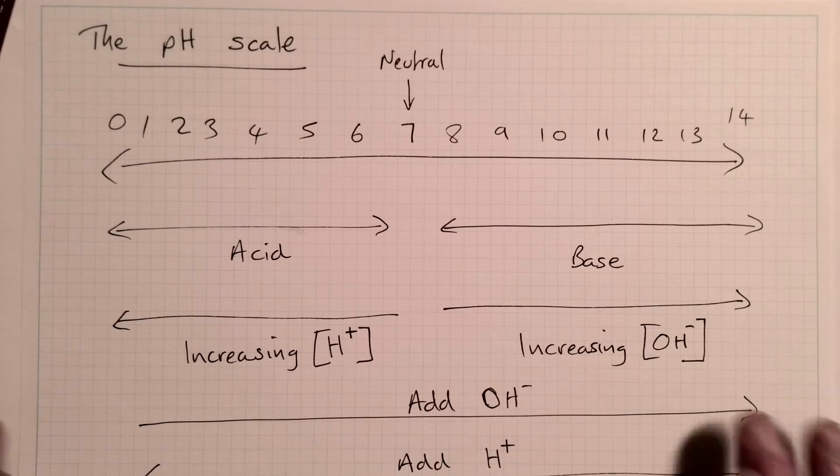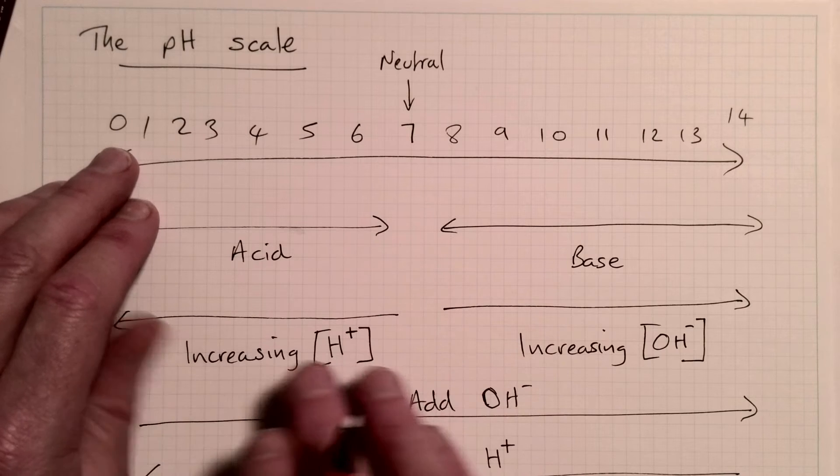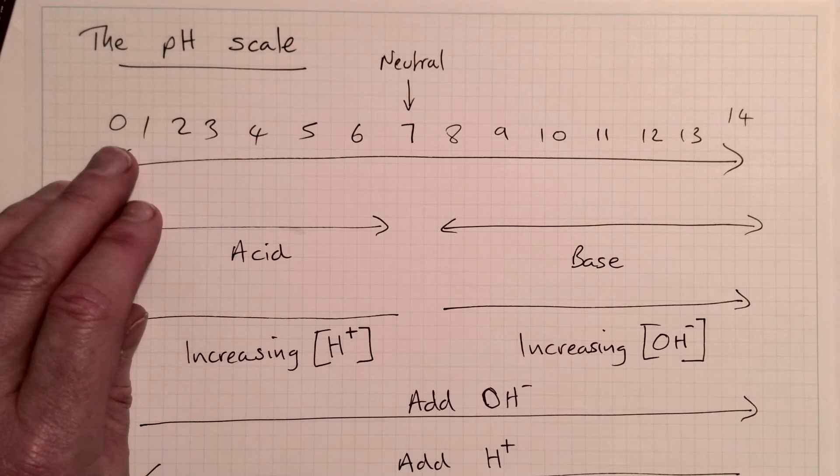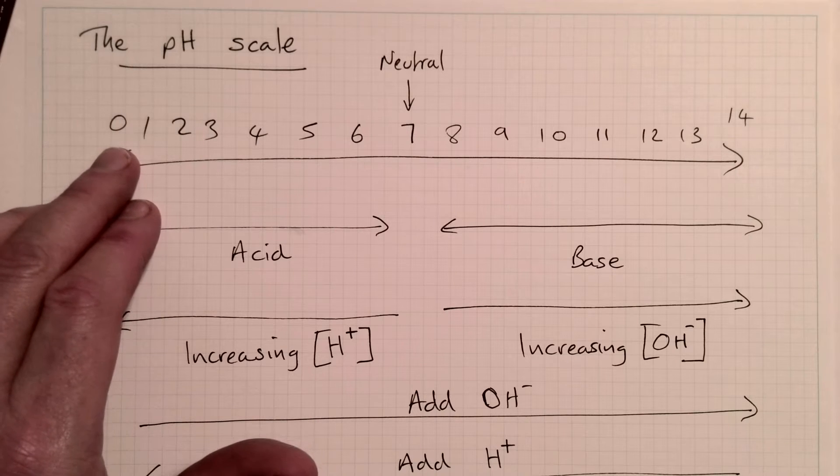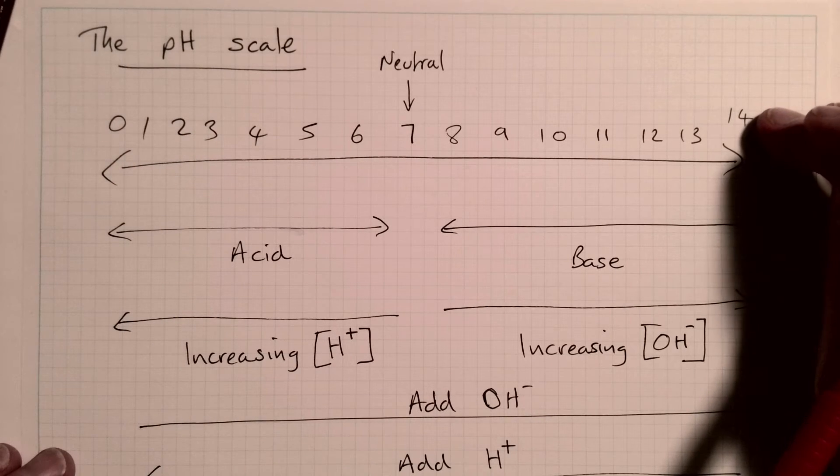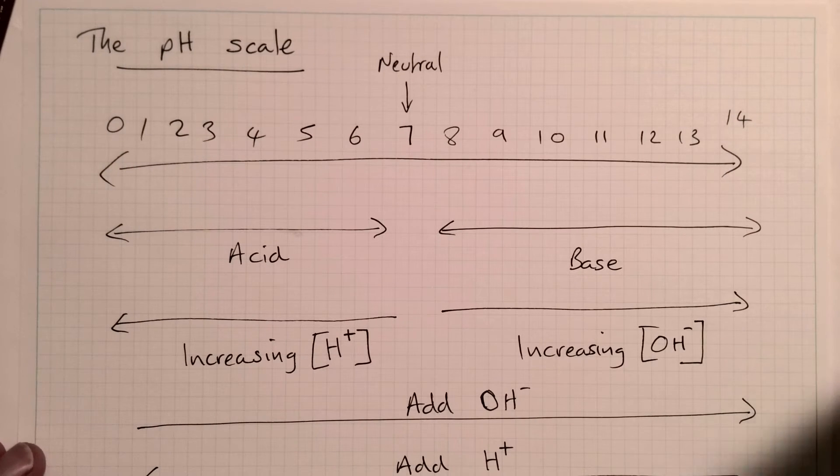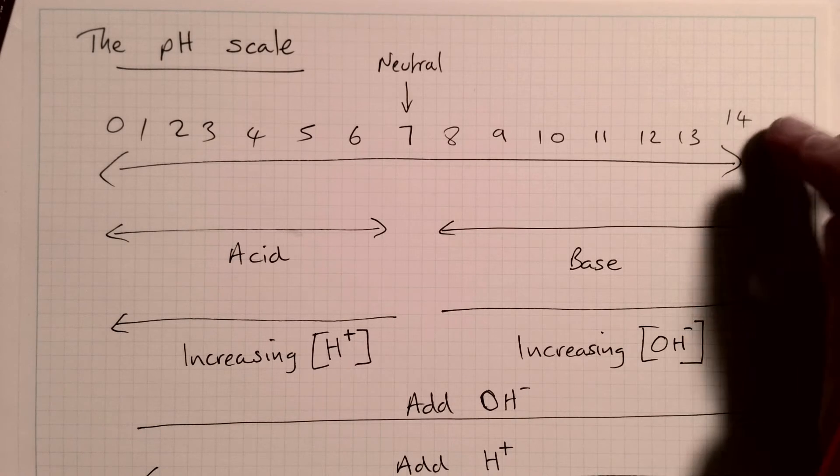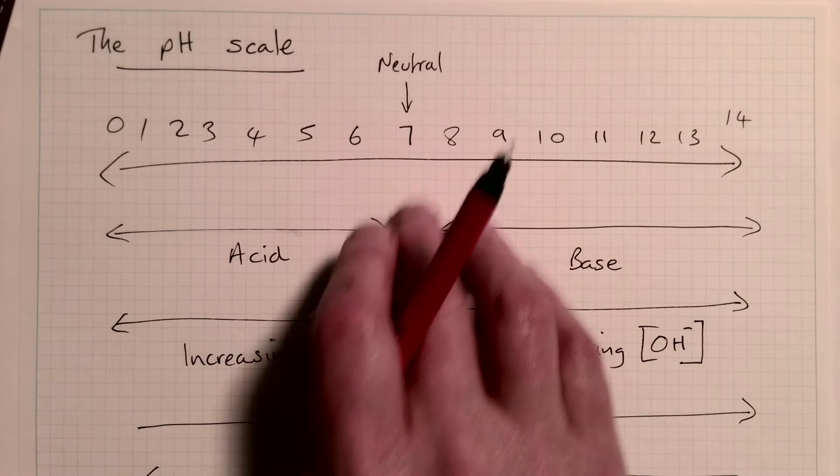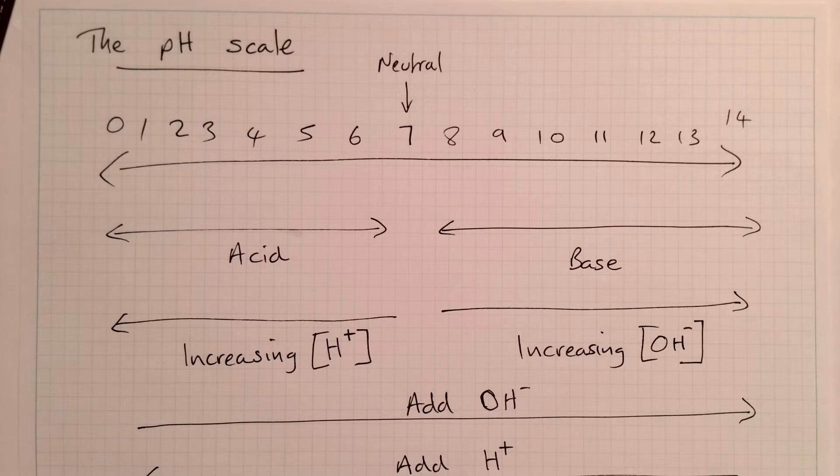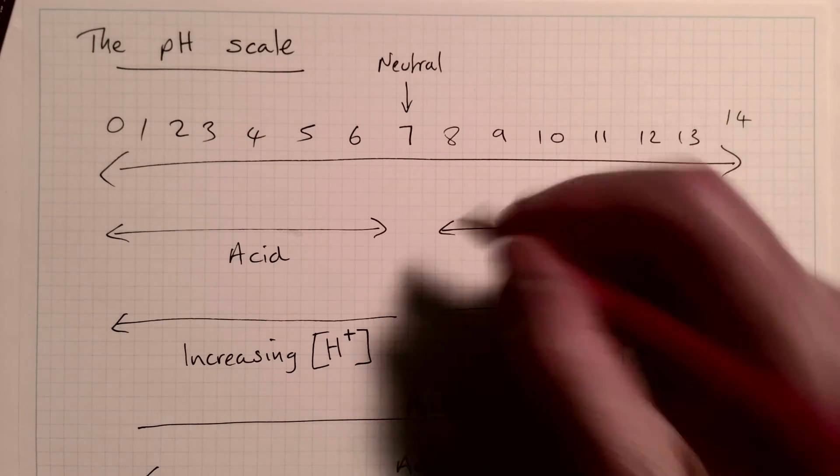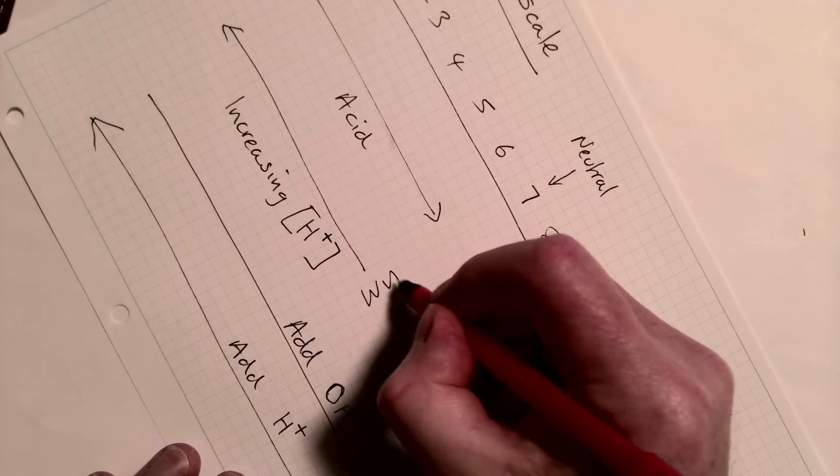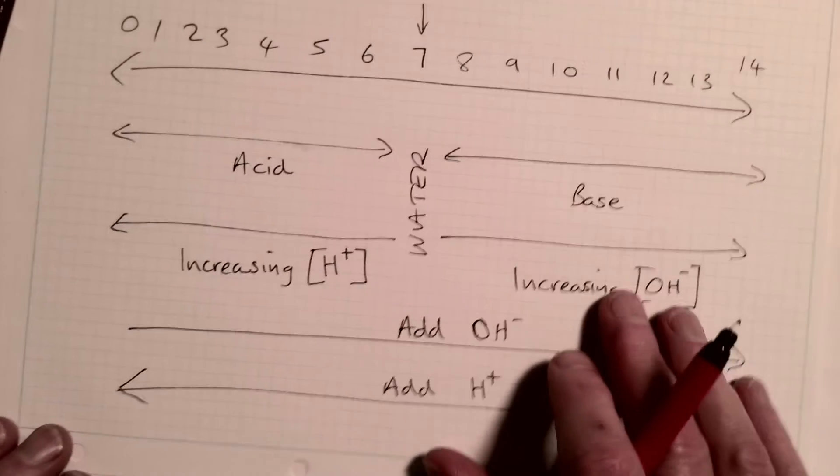So there's the pH scale. It measures from zero to 14. Zero is a very, very strong acid. This is any acid that can dissolve in water and produce very high concentrations of hydrogen ions. 14 is a very strong base where we can dissolve a base and produce a very high quantity of hydroxide ions. Remember, the hydrogen ions that already exist in water are balanced out by the hydroxide ions that already exist in water. So water, of course, itself is neutral.